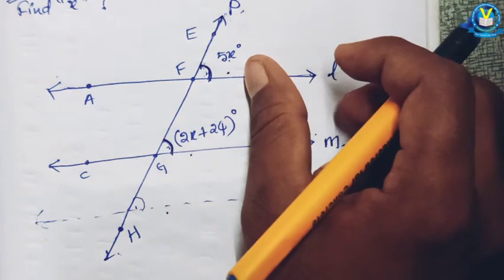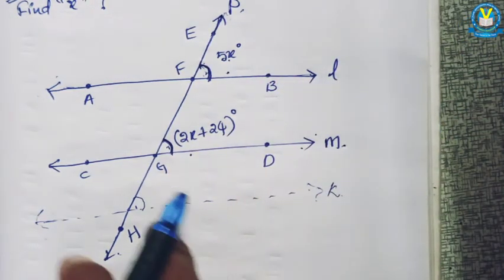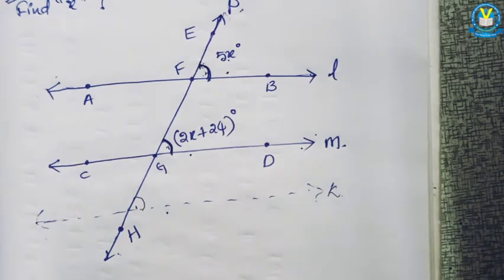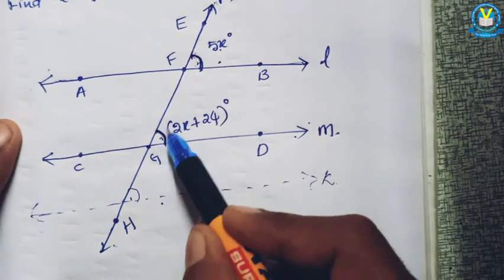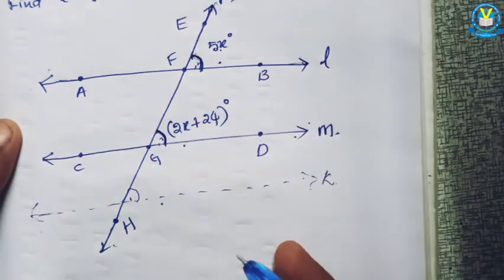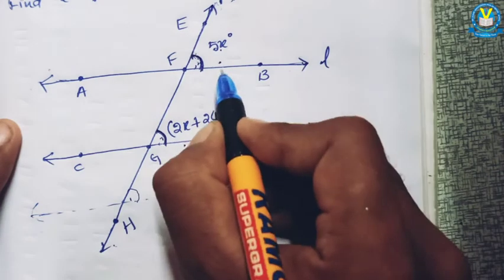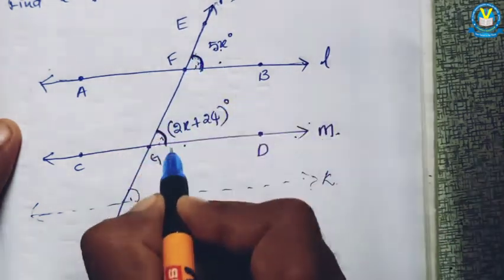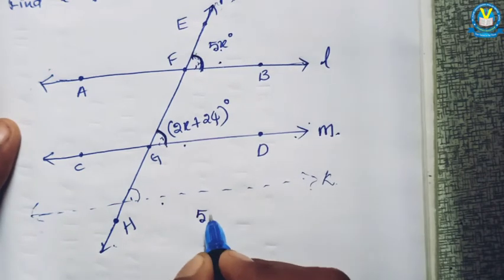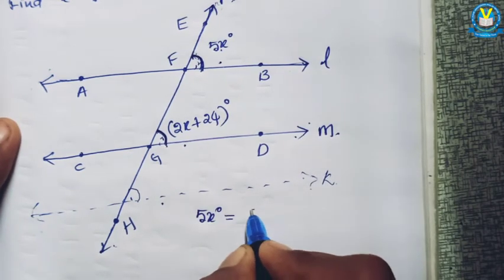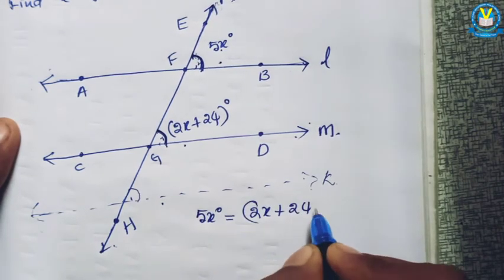So here, 5x equals 2x plus 24 degrees. Our aim is to find the value of x degrees. These two are corresponding angles — corresponding angles means angle 1 equal to angle 2. This is angle 1 and it is angle 2. Angle 1 equal to angle 2, so 5x degrees equal to 2x plus 24 degrees.